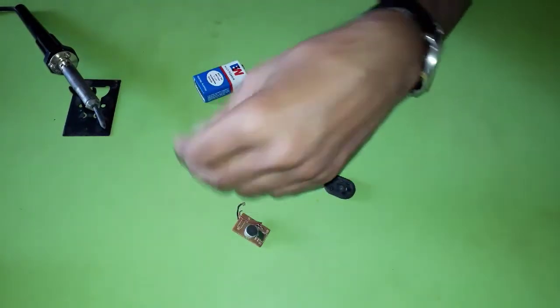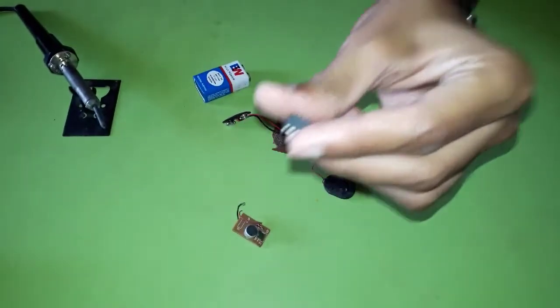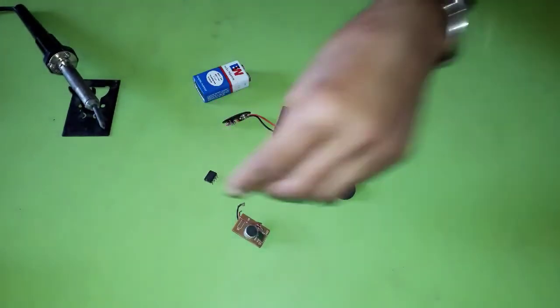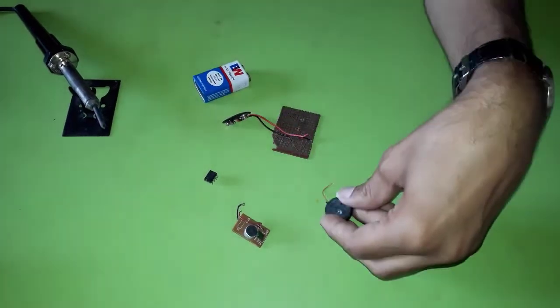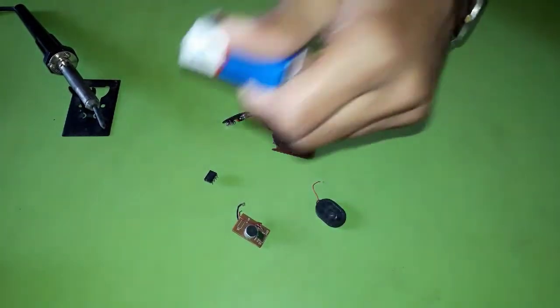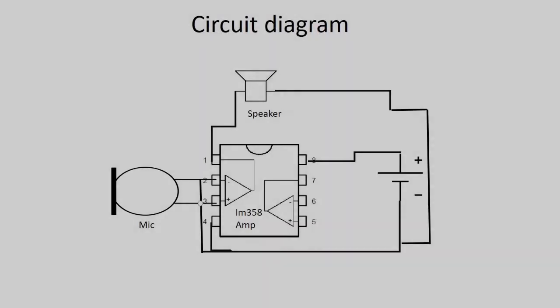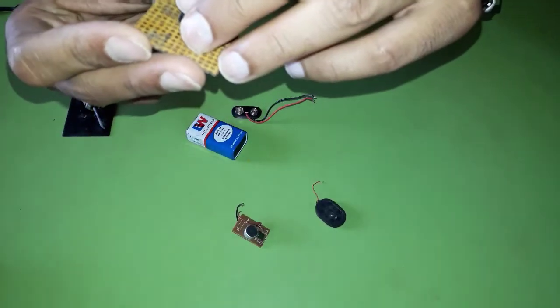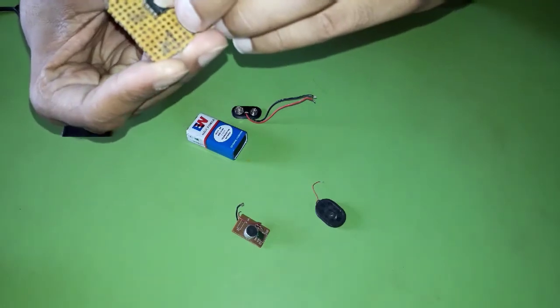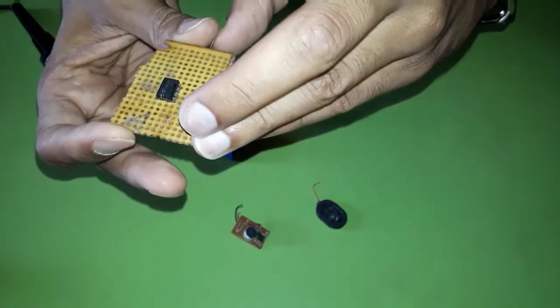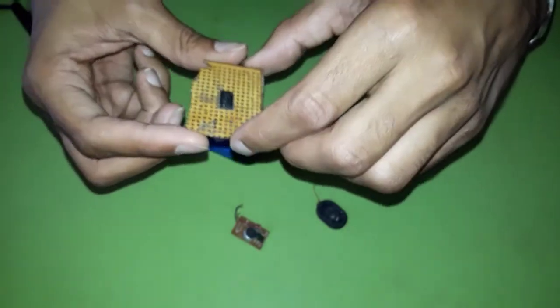So here is the mic, the amplifier that is LM358, and the speaker, this battery. Here is the circuit diagram - you can see how to place the components. Now first of all, I will place the amplifier, the LM358, on this PCB and then the other components.